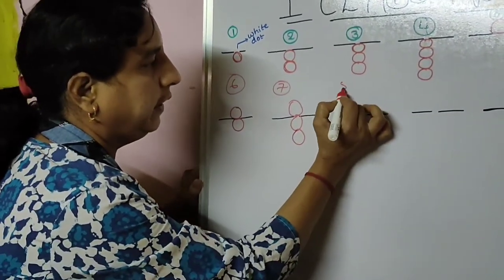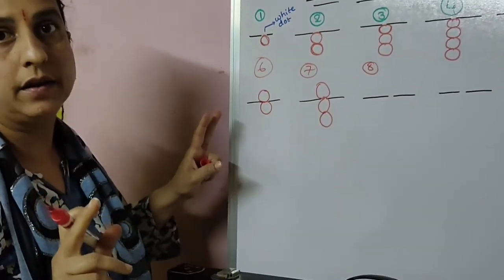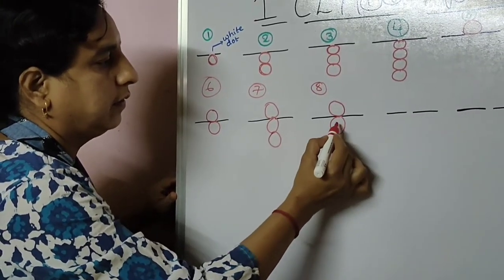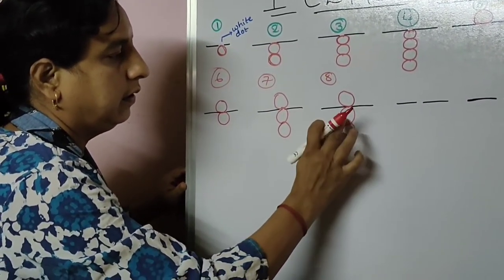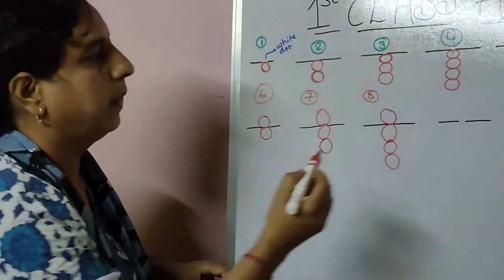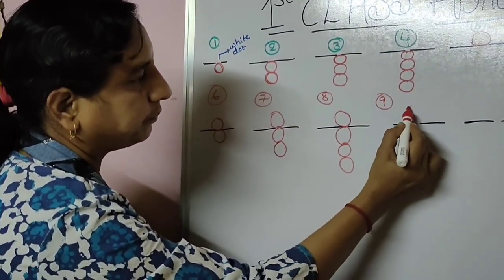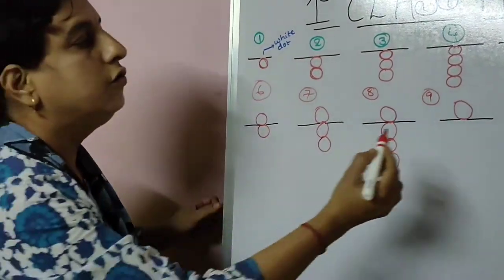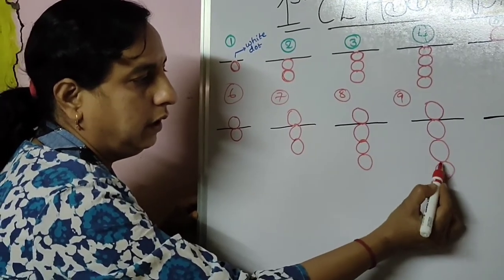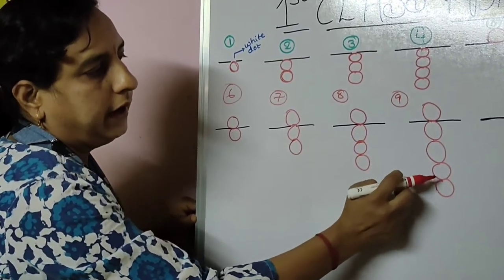So now after 7 comes 8. Take one paper and pencil and practice all this. This is 8: 5, 6, 7, 8. Then 9 — 1 upper bead, 4 lower beads for 9. 1, 2, 3, 4, 5, 6, 7, 8, 9, 9. Over.